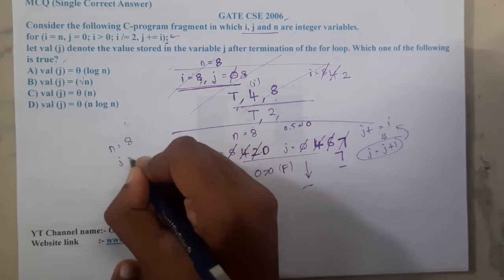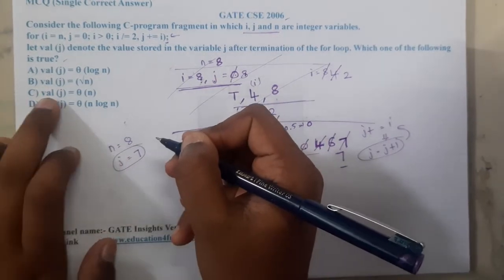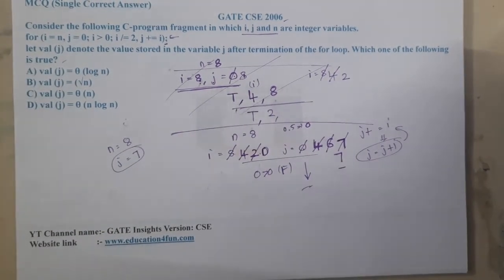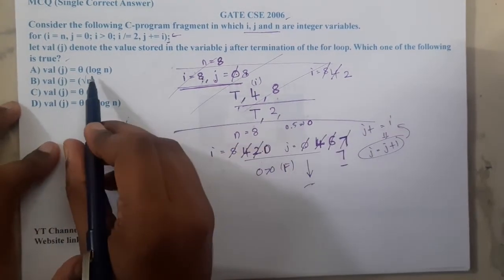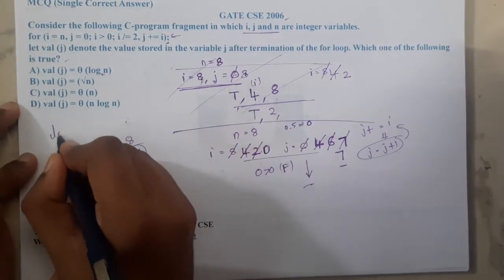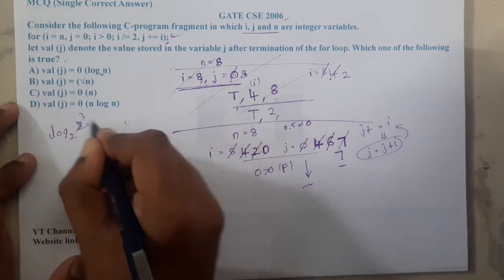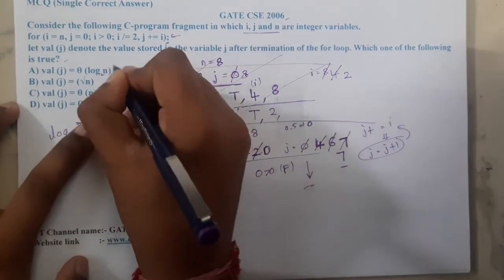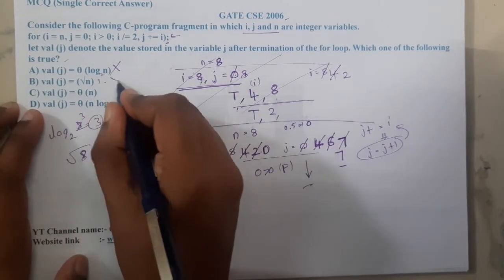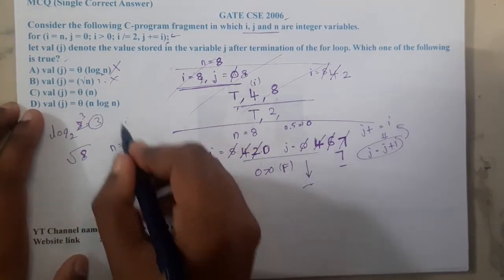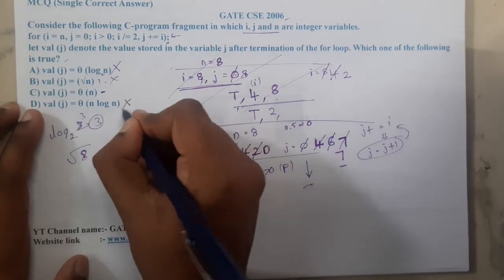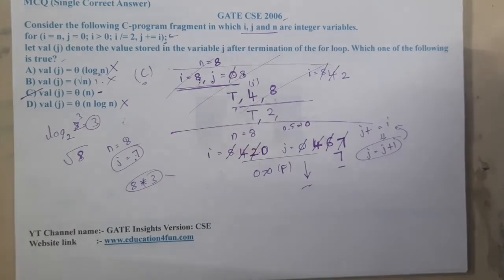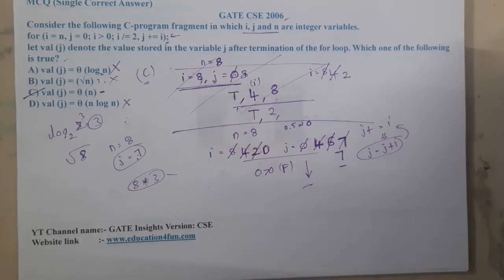So for n equals 8, we got j equals 7. Now let us compare with the options. Whenever you solve complexity-type problems, always try to find approximate values. Option A: log base 2 of 8 equals 3 — is 3 close to 7? No. Option B: square root of 8 is approximately 3 — also wrong. Option C: n equals 8 — is 7 approximately equal to 8? I think option C has a chance. Option D: n log n equals 8 times 3 equals 24 — too large, also wrong. So option C could be the correct answer.